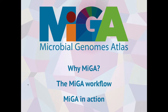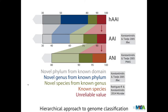MIGA uses a combination of the Genome Aggregate Average Nucleotide Identity concept, or ANI, and the Average Amino Acid Identity, AAI, to taxonomically classify a query genomic sequence against the genome sequences in its reference databases.